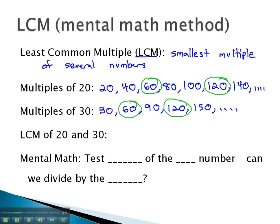However, we're interested in the least common multiple, which would be the smallest of these. The least common multiple then of 20 and 30 is 60.